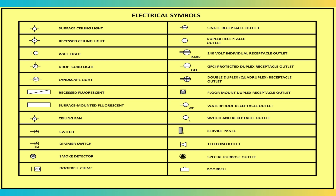The electrical symbols guide provides a comprehensive key to standard electrical symbols used in plans and diagrams. Examples include lighting symbols such as surface ceiling lights, recessed lights, fluorescent lights, and wall lights. Outlet symbols include single receptacle, duplex receptacle, GFCI-protected outlets, 240-volt outlets, and weatherproof receptacles. Switches include standard switches, dimmers, and combinations of switches with outlets. Special symbols cover smoke detectors, doorbells, service panels, and telecom outlets.